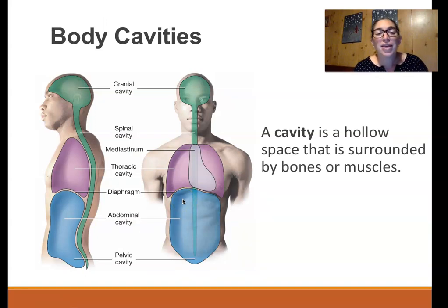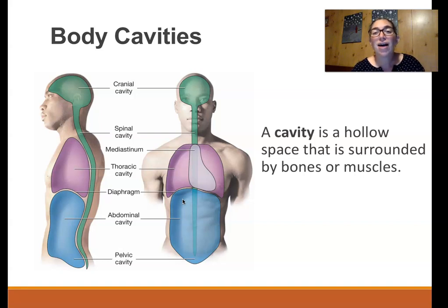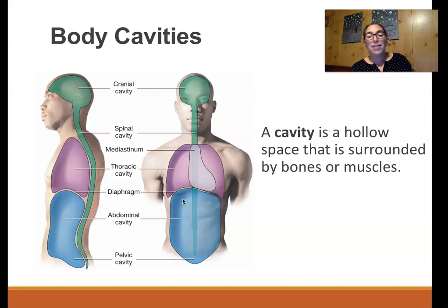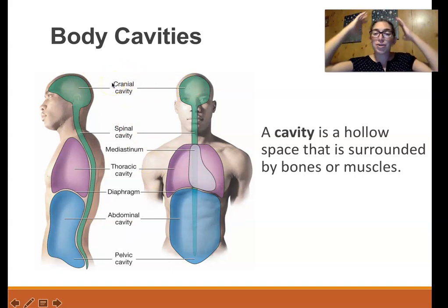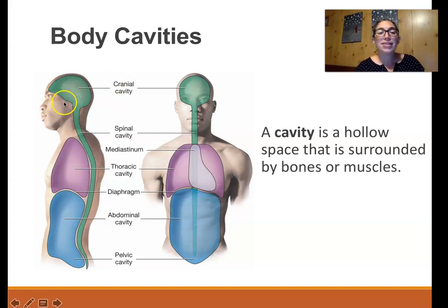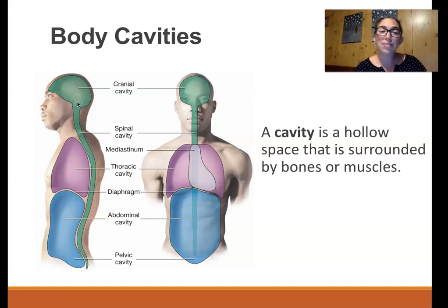Another way we can divide up the body is into naturally divided cavities within the body. A cavity is a hollow space usually filled with some fluid and surrounded by bones. The main cavities of the body include the cranial cavity, shown in green, which houses the brain and is protected by the cranium — the skull. Connected to that is the spinal cavity, which runs down your back, houses the spinal cord, is fluid-filled, and runs right through the center of your vertebrae.